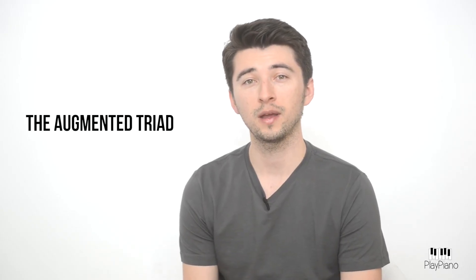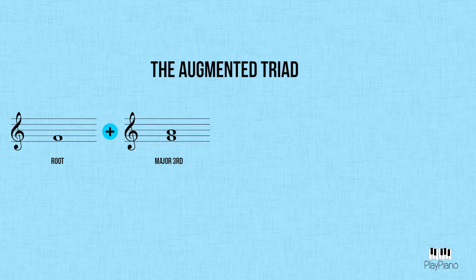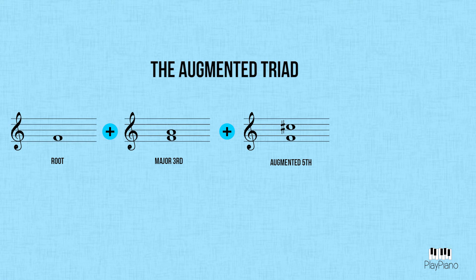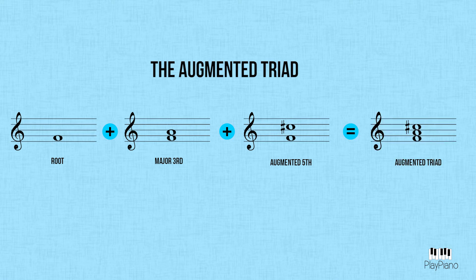After diminished is augmented. The augmented triad has a major third and an augmented fifth above the bass note, and has a very specific sound to it. If we were trying to make an F augmented chord, we would have to draw a major third — so A — and an augmented fifth above — so C-sharp. Augmented chords are great for creating suspense, surprise, and anger.